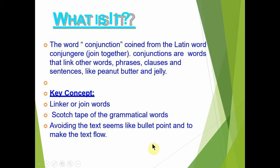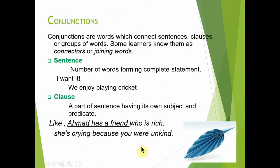Text کا flow بہتر کرنے کے لیے ہم یہ الفاظ use کرتے ہیں۔ Conjunctions کی definition یہ ہے کہ یہ وہ words ہیں جو sentences، clauses، یا group of words کو join کرتے ہیں۔ انہیں connectors یا joining words بھی کہتے ہیں — اگر کوئی سوال connectors define کرنے کا ہو تو اس کا مطلب conjunctions ہی ہوتے ہیں۔